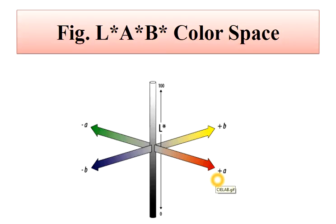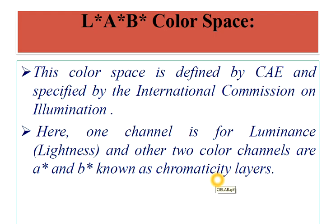That's all about L* A* B* color space. You have seen that three color channels are present — one channel is particularly for luminance in the L* channel, and the other two, A* and B*, are chromaticity layers. Today's question for this lecture is: what are the values of the A* and B* layers — what exactly do these two layers represent? Do comment your answer. Thank you, bye bye.